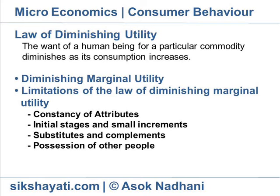Law of Diminishing Utility: The want of a human being for a particular commodity diminishes as its consumption increases. The law of diminishing utility is a generalization drawn from characteristics of human wants. The want of a thirsty man for water may be intense, but after he takes one glass, his intensity of desire for another glass becomes less. The Law of Diminishing Marginal Utility is called Gossen's First Law.